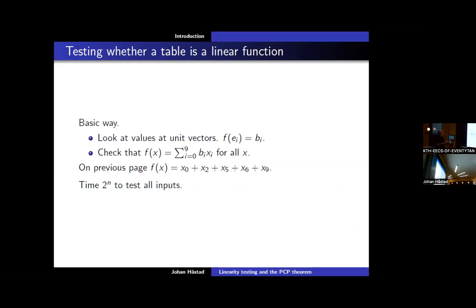Suppose I ask you to check if this is a linear function. What you can do is look at some special inputs — the unit vectors — and take the outputs. If it's going to be a linear function it has to be the sum of the corresponding bits: if you take unit vector e_i and get b_i, then the linear function should be the sum b_i x_i. There are 2^n output bits and you can do this efficiently.